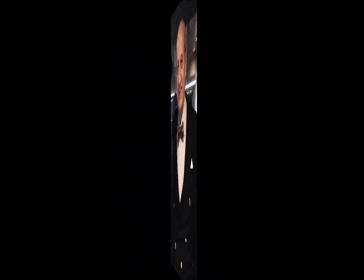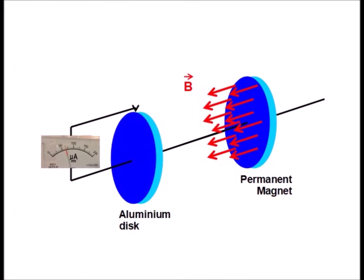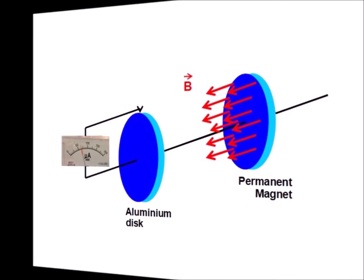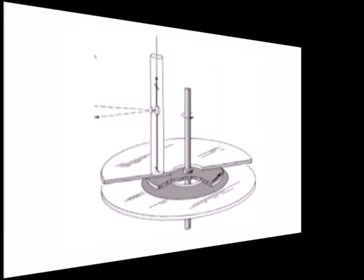The idea therefore came to put the conductor in rotation. Two fundamental experiments then seemed to confirm Maxwell's theory: the Faraday disk and the Rowland disk.